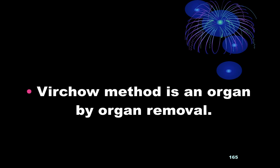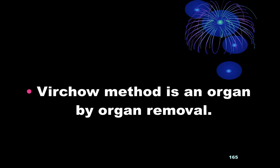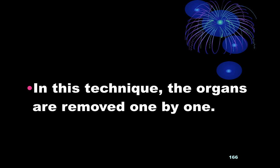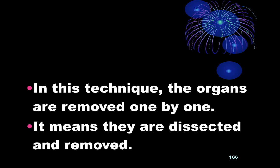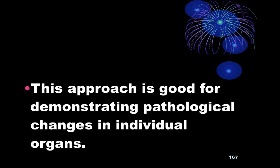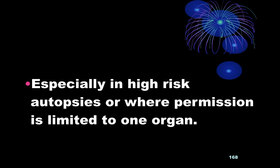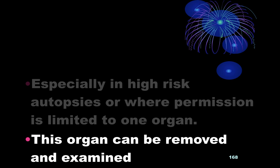Regarding Virchow's technique, Virchow's method is an organ-by-organ removal. In this technique, the organs are removed one by one — they are dissected and removed individually. This approach is good for demonstration of pathological changes in individual organs, especially in high-risk autopsies or where permission is limited to one organ. In high-risk autopsies involving fulminant infection or danger of spread, it limits the spread.